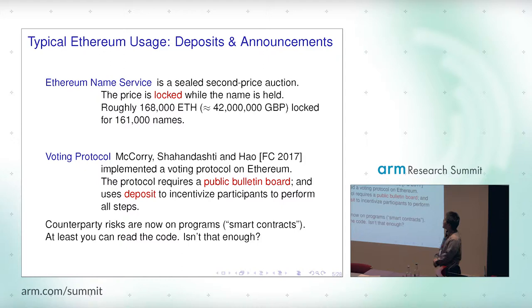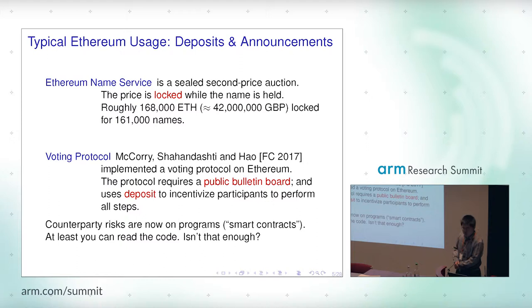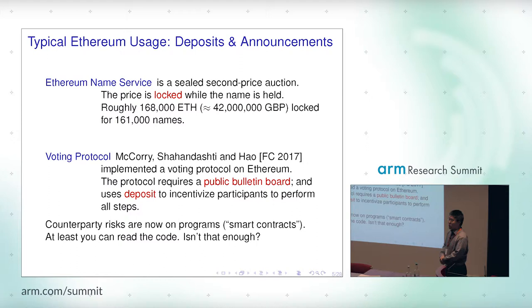The typical usage is deposits. There is a program called the ENS name service — a name resolution service like DNS — and you can bid for names to obtain a name. When you open an auction it's a sealed second-price auction, and when you win, your deposit will be locked in this program while you have control over the name. Hundreds of thousands of dollars worth of Ether is held for hundreds of thousands of names. Some cryptographers used ENS to implement their own voting protocol on top of it.